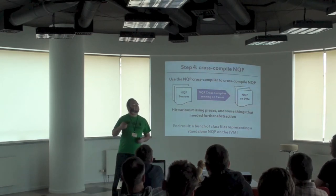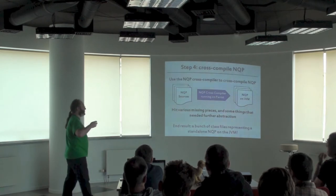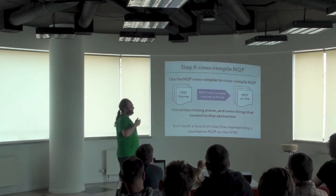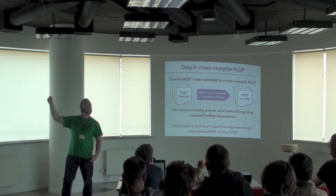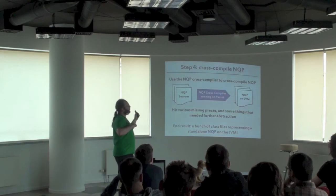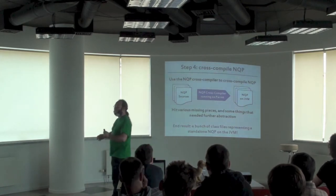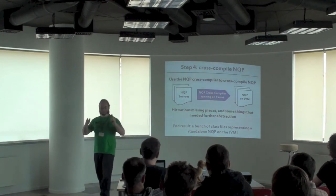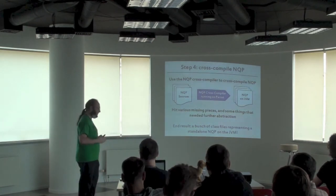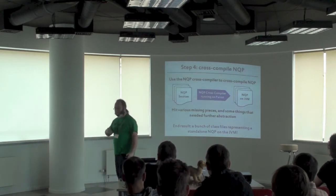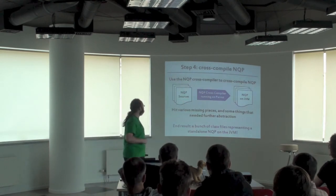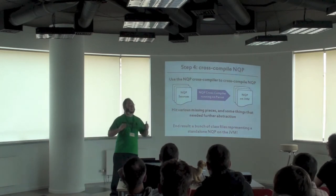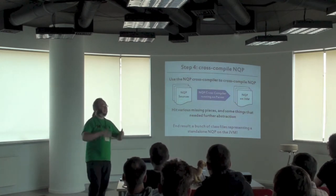One of the really nice things if you do this right is that you now have a cross-compiler — it's running on Parrot but running the JVM backend production code. You have an NQP running on Parrot that outputs bytecode for the JVM. Since NQP is written in NQP, you can take NQP's source code, throw it into your cross-compiler, and out pops an autonomous, not-dependent-on-Parrot version of NQP that runs on the JVM. You don't actually port the thing — you get NQP to essentially spit itself out on the new virtual machine.